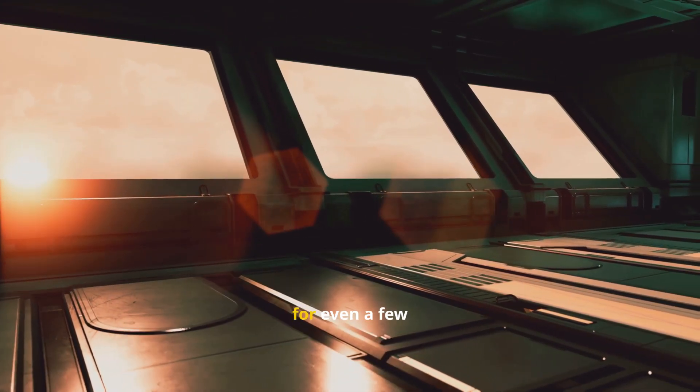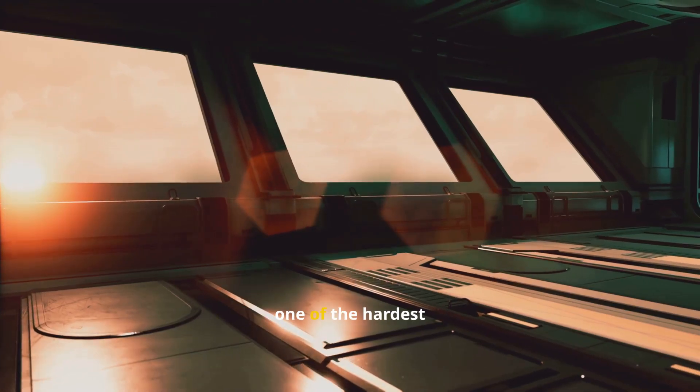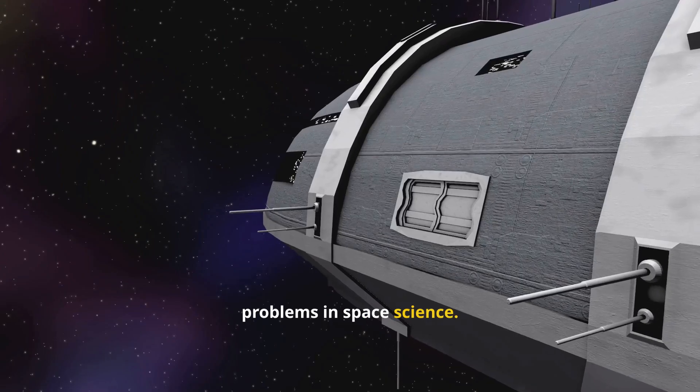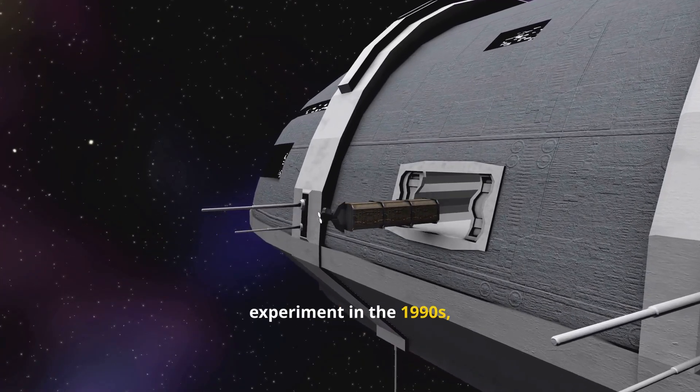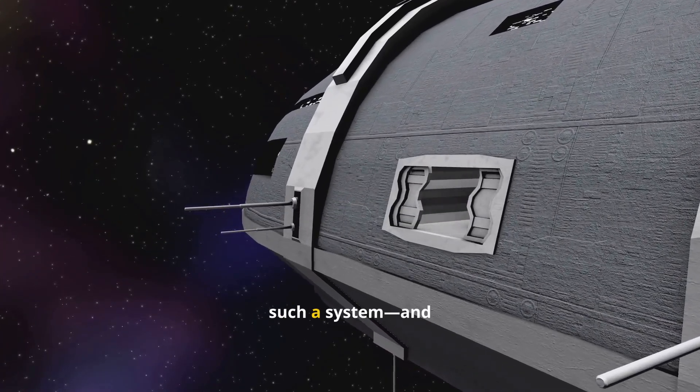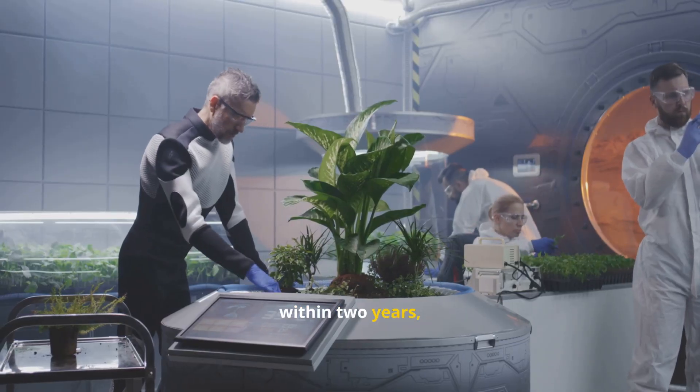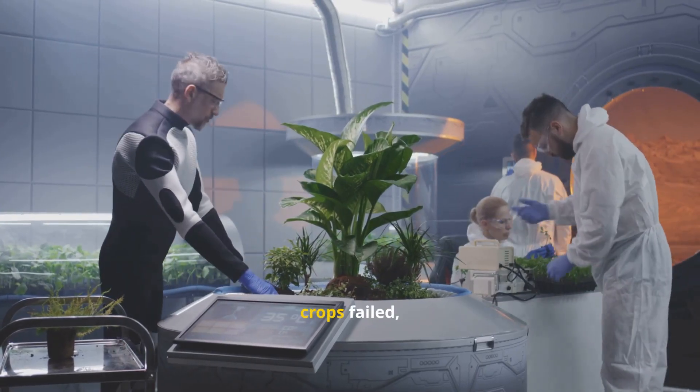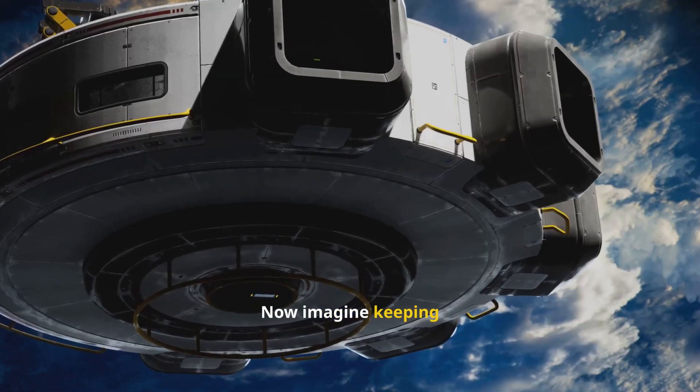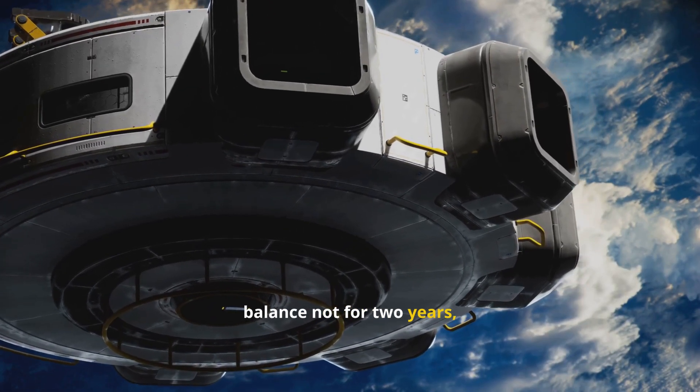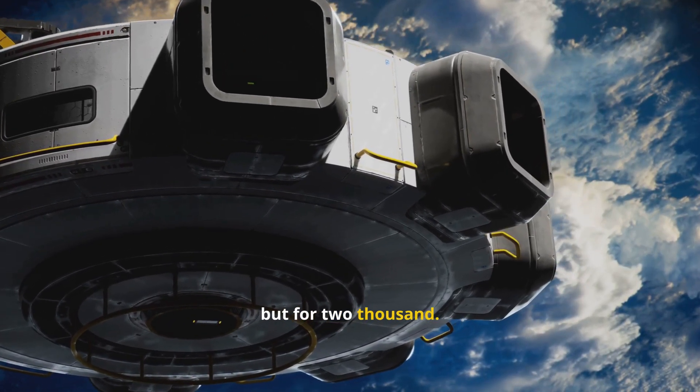But here's the reality check. Keeping a closed ecosystem balanced for even a few decades is already one of the hardest problems in space science. Biosphere 2, an Earth-based experiment in the 1990s, tried to simulate such a system, and within two years, oxygen levels had dropped dangerously, crops failed, and human health declined. Now imagine keeping balance not for two years, but for 2,000.